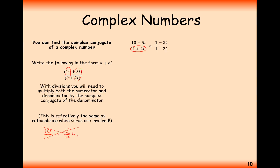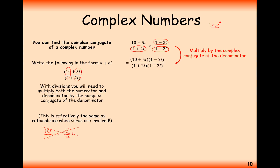What we need to do is rationalise the bottom — create a real number on the denominator. So we take the bottom complex number, 1 plus 2i, and times the top and bottom by 1 minus 2i, its complex conjugate. When we times 1 plus 2i by 1 minus 2i, that's going to give us a real value — effectively the same as Z times Z star. We must times both top and bottom by the same thing to keep the fraction equivalent.